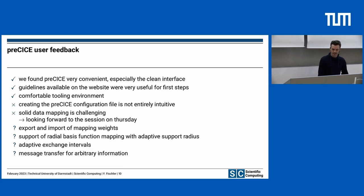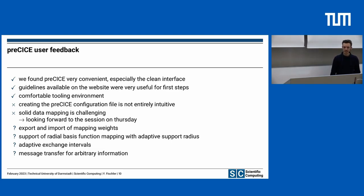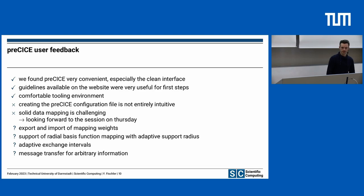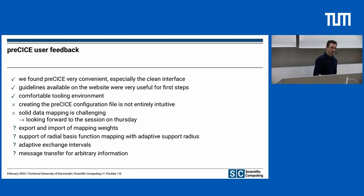The second idea is adaptive support radius in radial basis functions. This would help in creating a mapping which uses a larger support radius in regions where our mesh has edges of 10 kilometers, and a smaller support radius in regions where our mesh has edge lengths of about 250 meters. Third, adaptive exchange intervals would be useful because we want to couple the code with one-month intervals in winter and smaller exchange intervals in summer, when we have a higher melting rate and need to exchange more often.